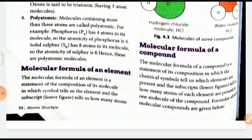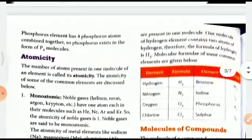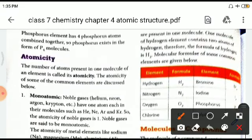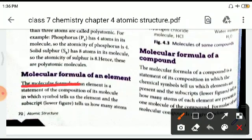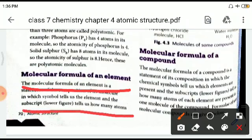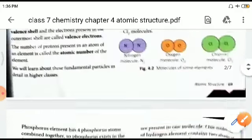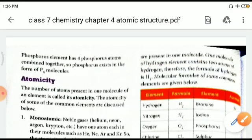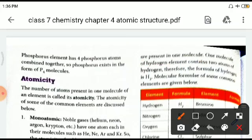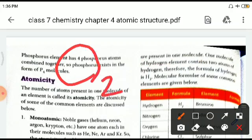The molecular formula of an element is the statement of composition of its molecule, in which symbols tell us the elements and the subscript tells us how many atoms are present in one molecule. Please underline this definition. For example, one molecule of hydrogen contains two atoms of hydrogen, therefore the formula is H2. In O2, 'O' is the element and '2' is the number of atoms.